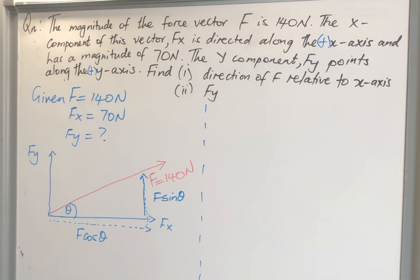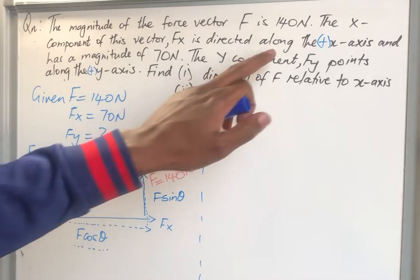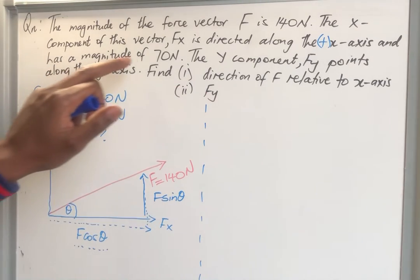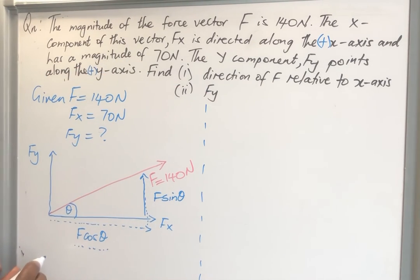Now we have all this, but there is one thing that we have in common. What is that? It's this side. This side is given already because they told us on the question that Fx is directed along the positive x-axis and it has a magnitude of 70 newtons. So what that means is that F cos theta is equal to 70 newtons, like this.